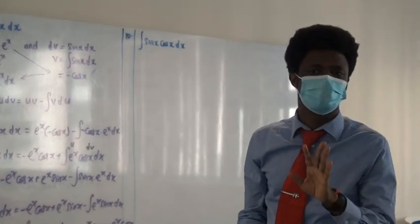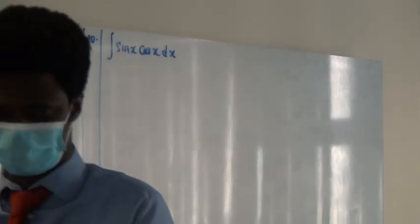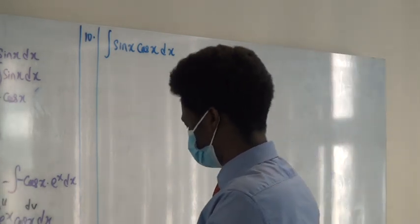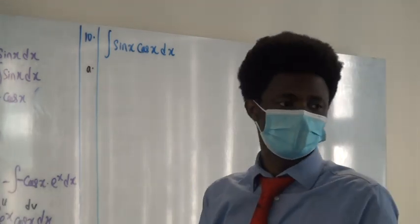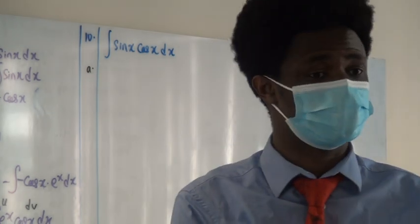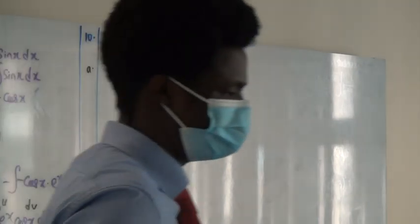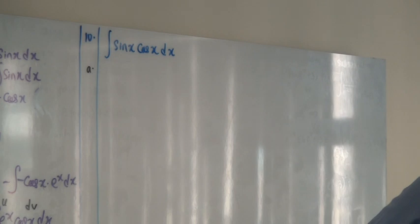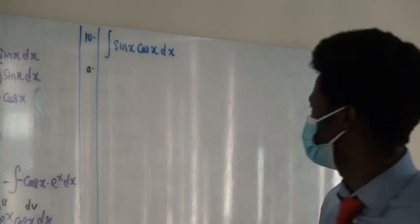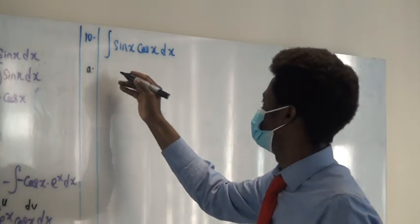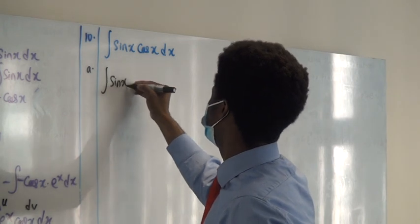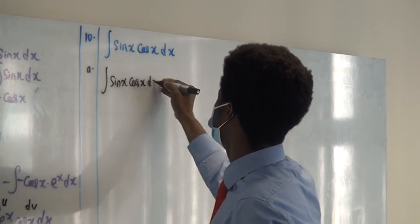Question 10 asks you to find the integral in three ways. The instruction says: find ∫sin(x)cos(x)dx using the double angle formula, using substitution, and using integration by parts. By double angle: sin(2θ) = 2sin(θ)cos(θ), so sin(x)cos(x) = ½sin(2x). Therefore the integral equals ∫½sin(2x)dx.